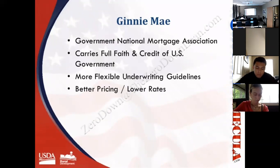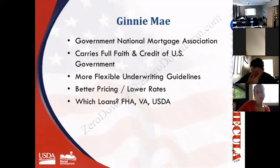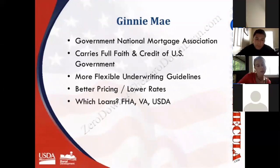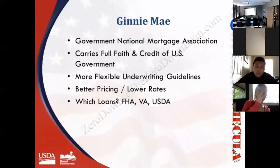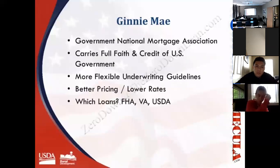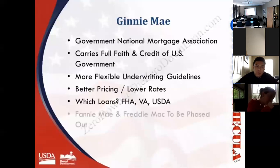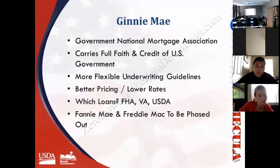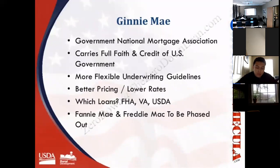Unlike Ginnie Mae, Fannie Mae and Freddie Mac have government oversight but are not actual government agencies. The loans they buy and sell are not 100% backed by the U.S. government, so their standards and guidelines are tighter. The loans backed by Ginnie Mae — where the federal government provides a guarantee to the end investor — are FHA, VA, and USDA. This makes those mortgages less risky to investors, which means lower pricing and easier qualifying for the borrower. Fannie Mae and Freddie Mac oversee what are considered conventional loans.